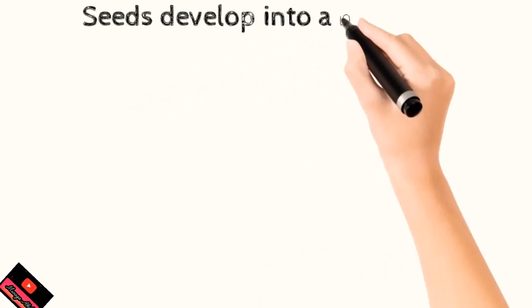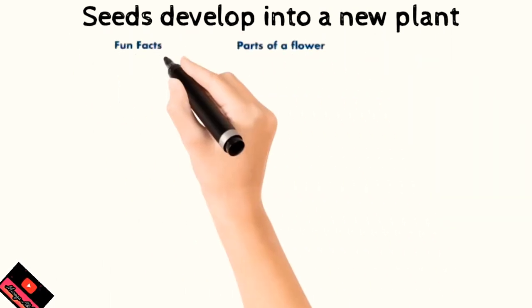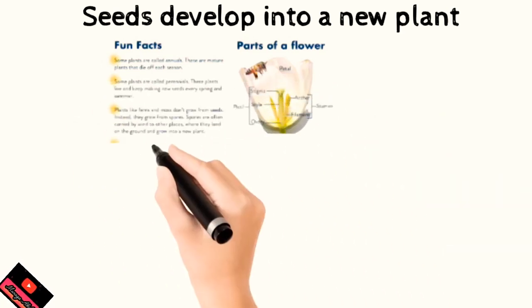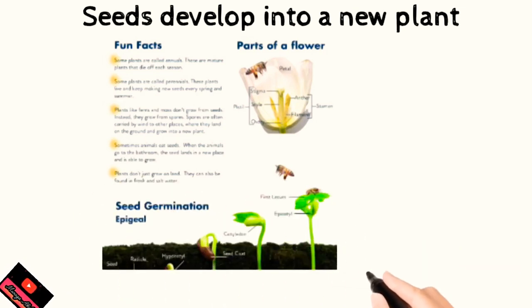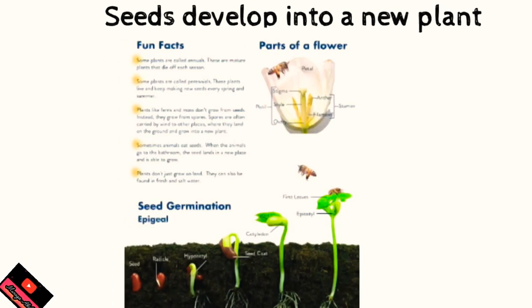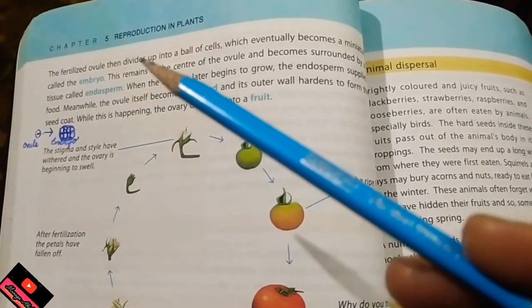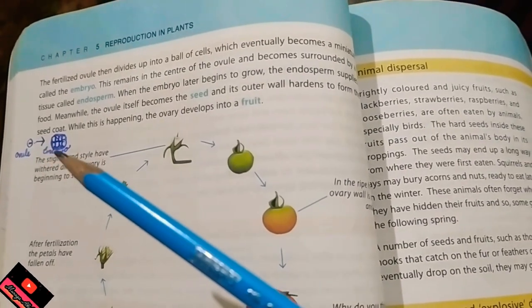Seeds develop into a new plant after dispersal. Dispersal occurs by four ways: by animal, by wind, by water, or by explosive phenomena. We have studied the parts of the flower, pollination, and fertilization. Now we study germination — how a seed develops into a new plant. The seed has a pore that absorbs water; the plumule develops into shoot and the radicle develops into root. The fertilized ovule divides into a ball of cells.